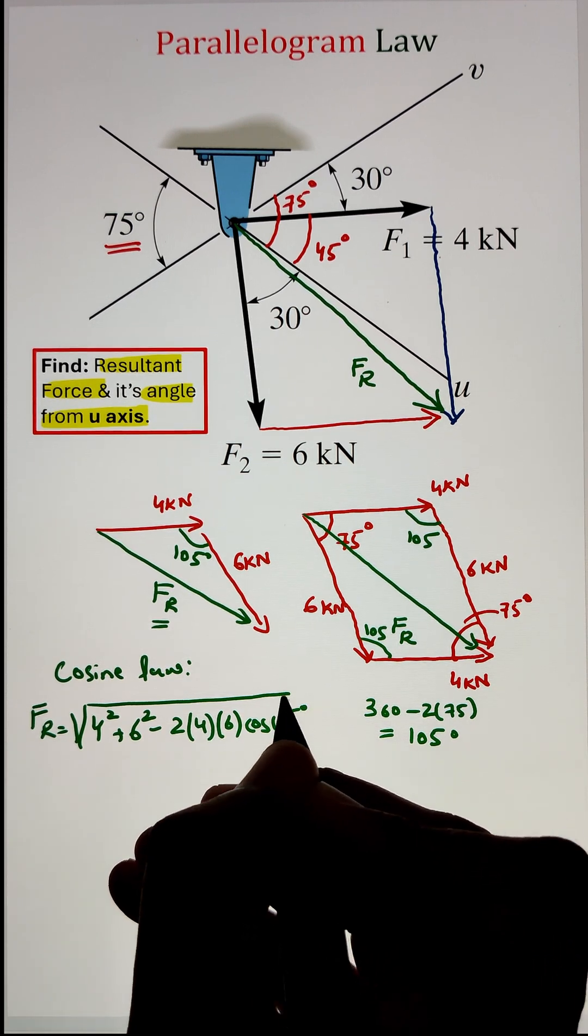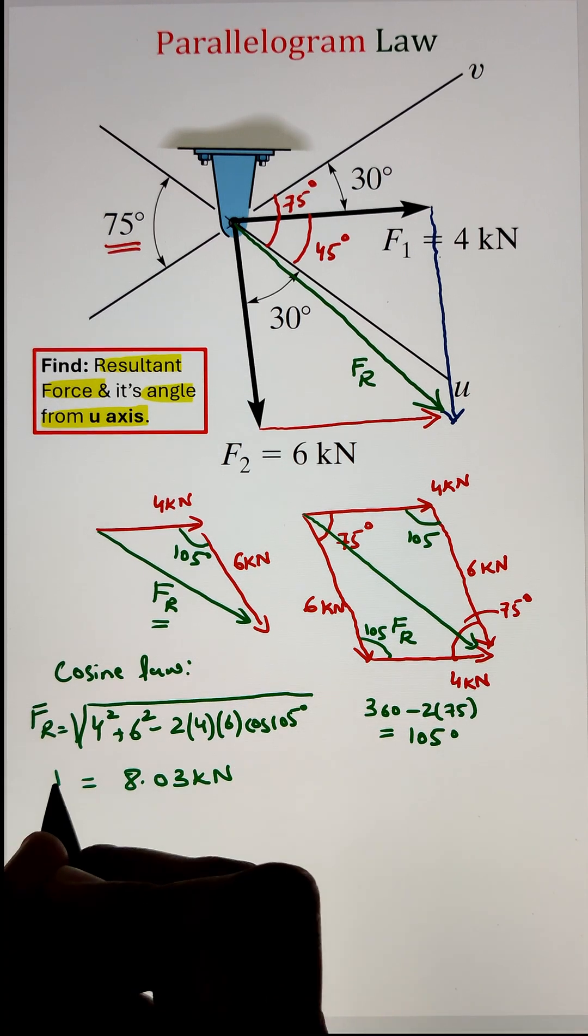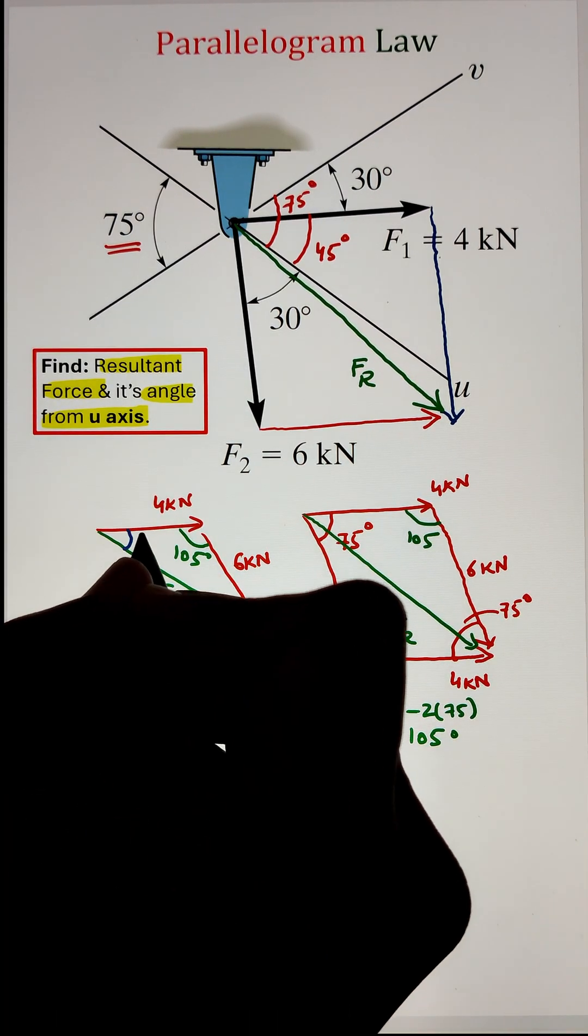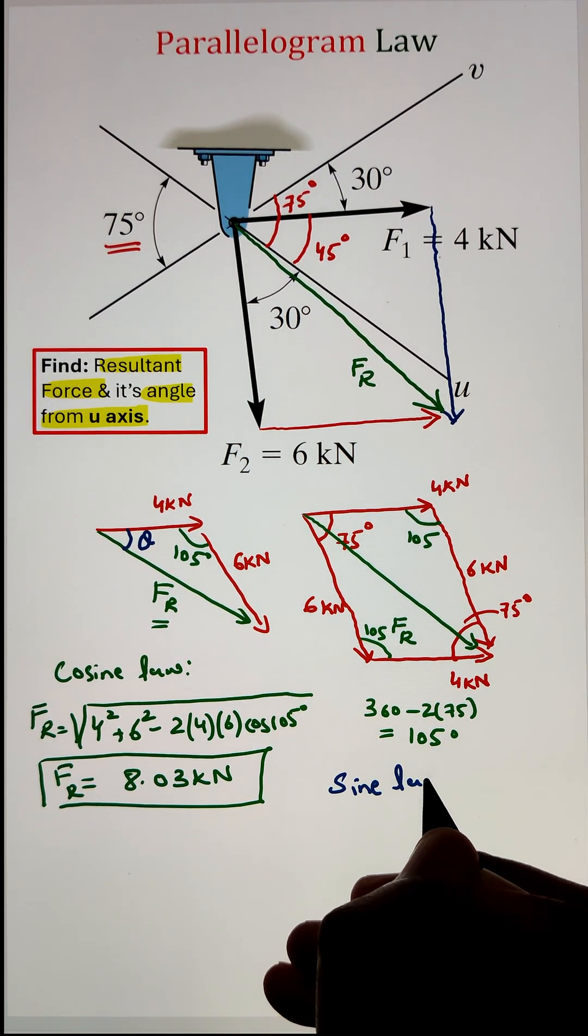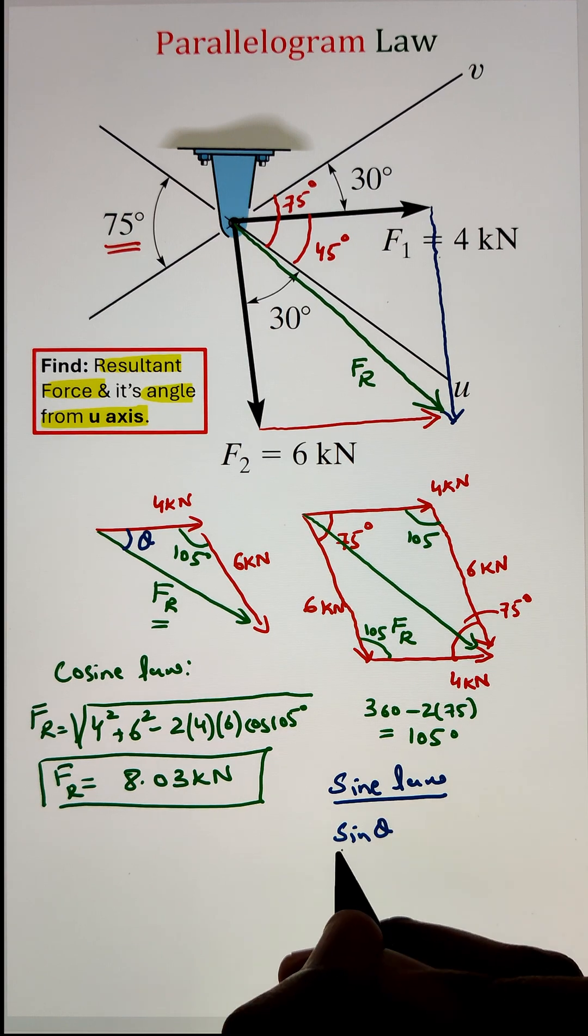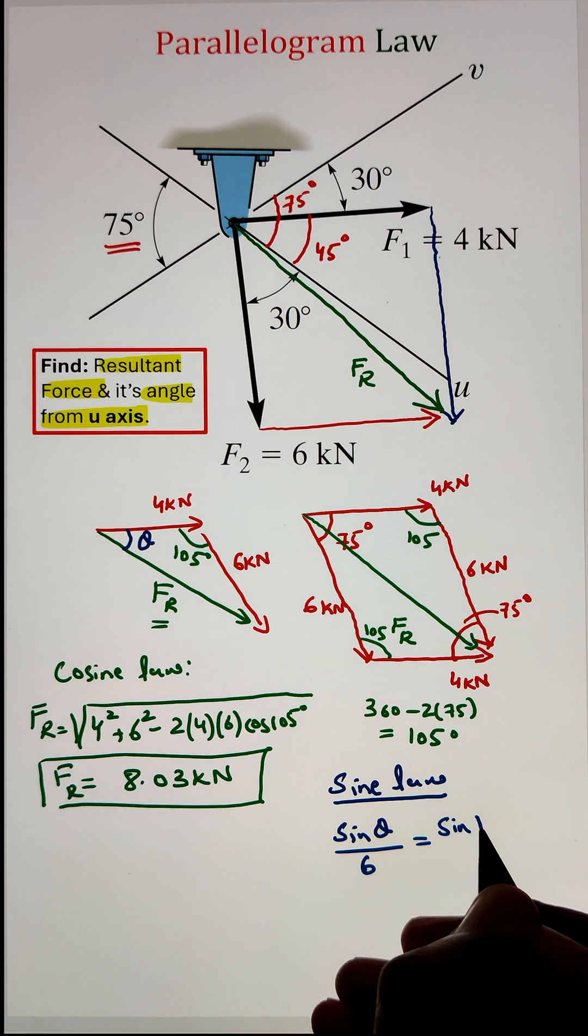That is sine of angle theta divided by the side of a triangle opposite to that angle theta. In this case, it is 6 equals to the sine of angle 105 divided by the side opposite to the angle 105. That is our resultant force of 8.03. Simplifying, we get the value of theta as 46.22.